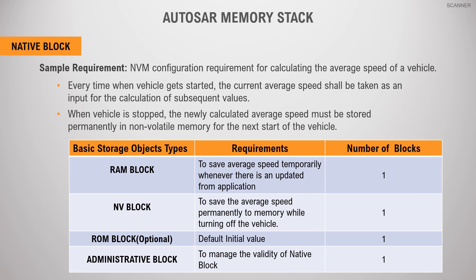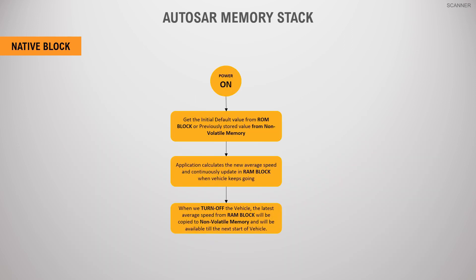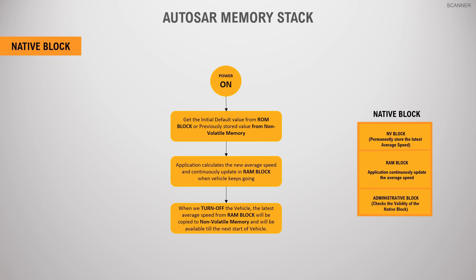One administrative block manages the status of the block. One ROM block can also be configured, which initializes the initial value of average speed to zero. When the application calculates the average speed for the very first time, it reads the value from the ROM block and initializes the average value to zero. Then the application calculates the average value during vehicle runtime and frequently updates it in the RAM block.